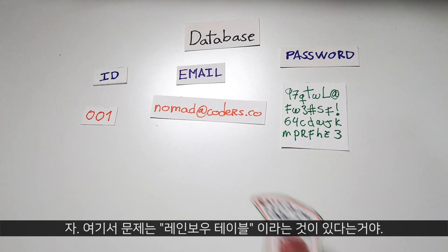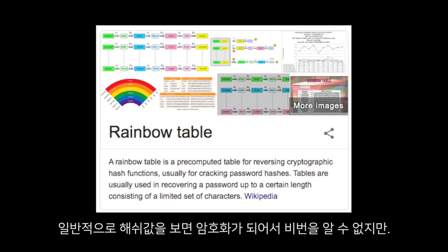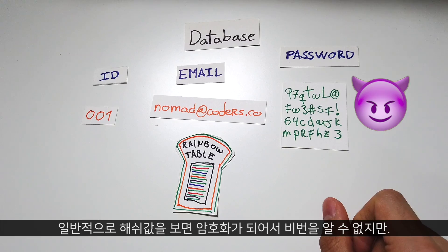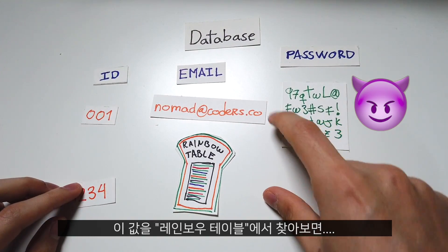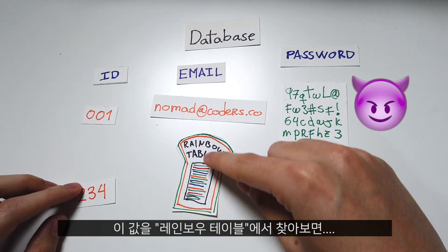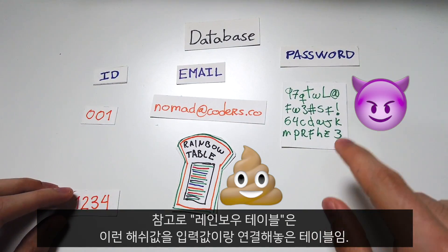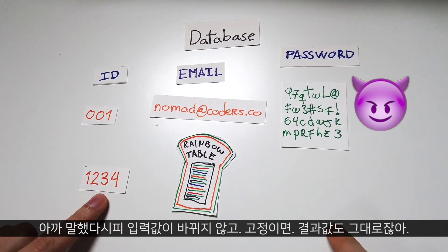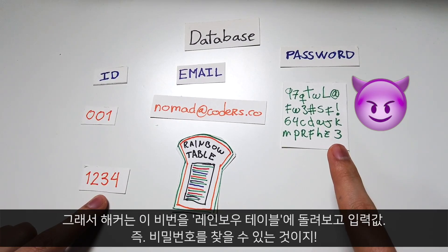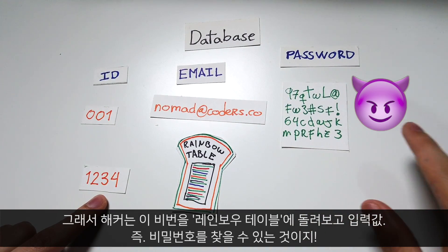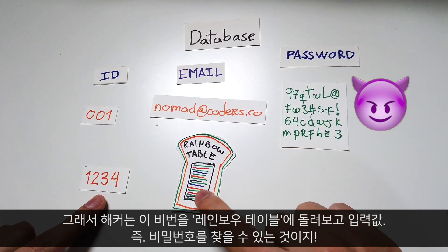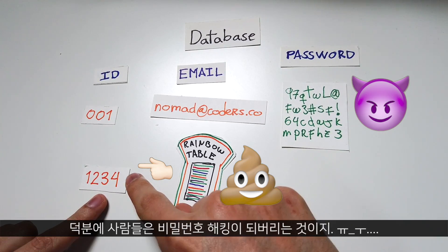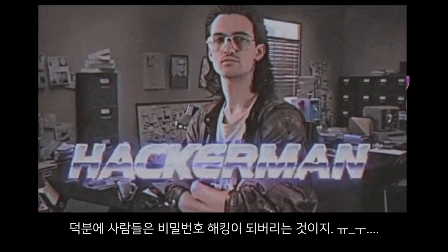The problem here is that we have something called a rainbow table attack. For example, if somebody copies this hash, they don't know what the input is, but they can look it up on a rainbow table. Rainbow tables are just collections of hashes of easy passwords. Since the input doesn't change, the output doesn't change — so the attacker can copy a hash, and if they find it on the rainbow table, the rainbow table will tell them which input produced that hash. So go ahead and try that password — and this is when people get hacked.